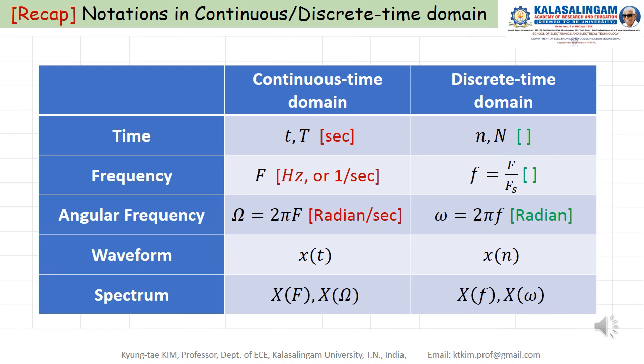For my lecture, let me review notations. Continuous time domain, discrete time domain. For the time, lowercase T and uppercase, this is a period. The discrete case is N, this is M. Also T, lowercase is a variable, and T is constant, this is a period. And unit is second. In discrete time, this is no unit. Also, of course, N, M is integer.